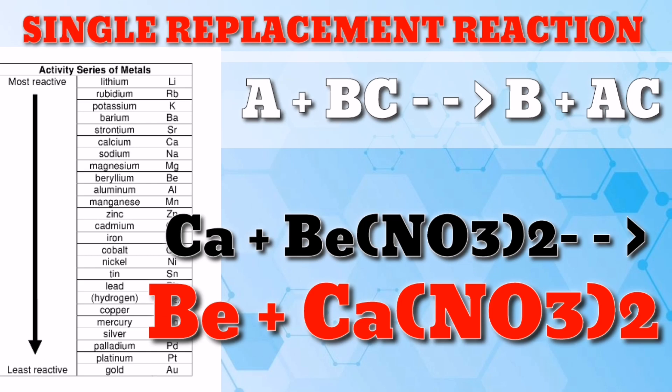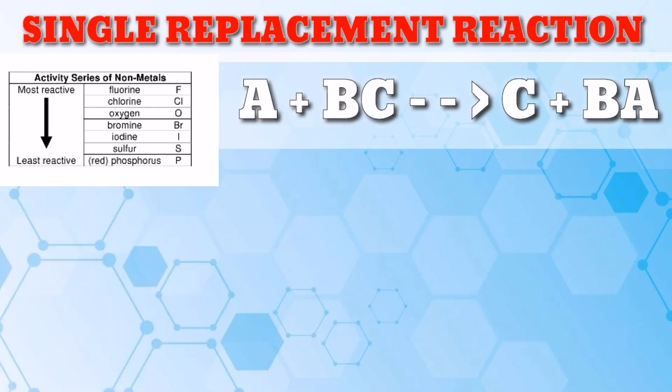Excellent. Now, let's have the activity series of nonmetals with the general equation A plus BC equals C plus BA. Always remember, when the element that is doing the replacing is a nonmetal, it must replace another nonmetal in a compound. A is a nonmetal and replaces the nonmetal C in the compound BC.